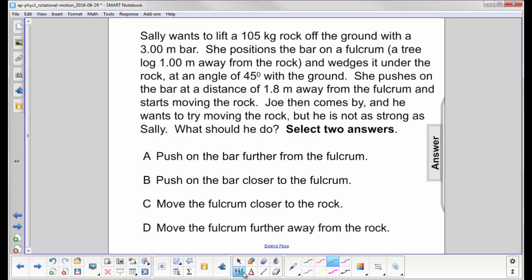Sally wants to lift a large rock off the ground with a three meter bar. She positions the bar on a fulcrum, which is a tree log, one meter away from the rock, and wedges it under the rock at an angle of 45 degrees with the ground. She pushes on the bar at a distance of 1.8 meters away from the fulcrum and starts moving the rock.